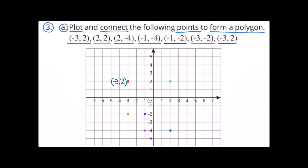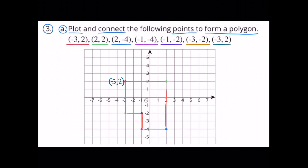Finally, I plotted the last set of coordinates, which were exactly the same as the first set — negative 3 and positive 2. I started at the origin, moved to the left 3 units along the horizontal axis, and then moved up 2 units along the vertical axis. Here's a look at the polygon after I connected the dots.